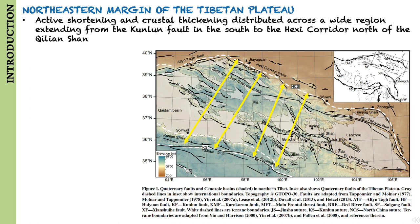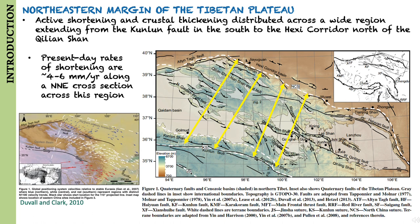Along the northeastern margin of the Tibetan Plateau, active shortening and crustal thickening are distributed across a wide region extending from the Kunlun Fault in the south to the Hoshi Corridor north of the Qilian Shan. Geodetic data suggests that present-day rates of shortening are 4 to 6 mm per year along a north-northeast cross-section across this region.